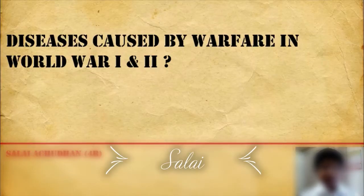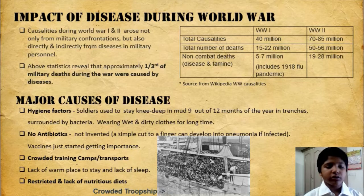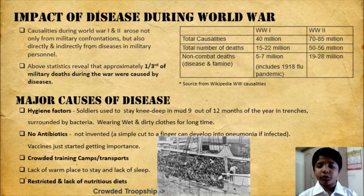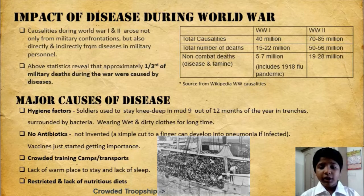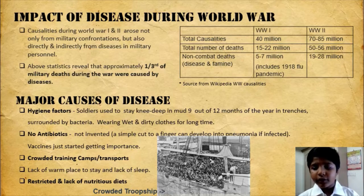Hi everyone, my name is Salia Chudan. My topic is Disease Caused by Warfare in World War I and II. Casualties during World War I and II arose not only from military confrontations but also directly and indirectly from diseases in military personnel. The total casualties in World War I are 40,000,000 and in World War II are 70,000,000 to 85,000,000. Total deaths in World War I are 15,000,000 to 22,000,000, and in World War II are 50,000,000 to 56,000,000. Non-combat deaths from disease and famine in World War I are 5,000,000 to 7,000,000, and in World War II, 19,000,000 to 28,000,000.